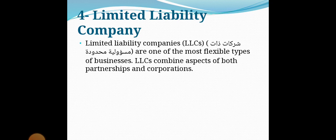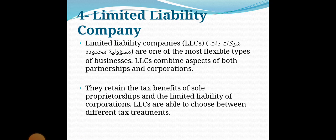The last type of business organization is the limited liability company — الشركة ذات المسؤولية المحدودة. LLCs are one of the most flexible types of businesses. They combine aspects of both partnerships and corporations — تجمع بين جوانب الشراكات والشركات — and retain the tax benefits of sole proprietorships and the limited liability of corporations. LLCs are able to choose between different tax treatments.